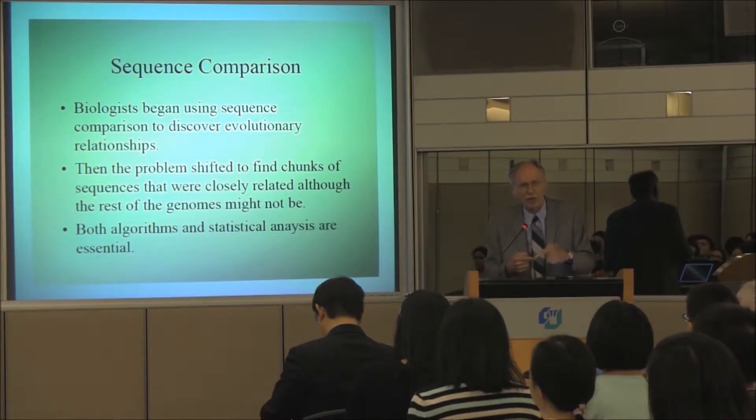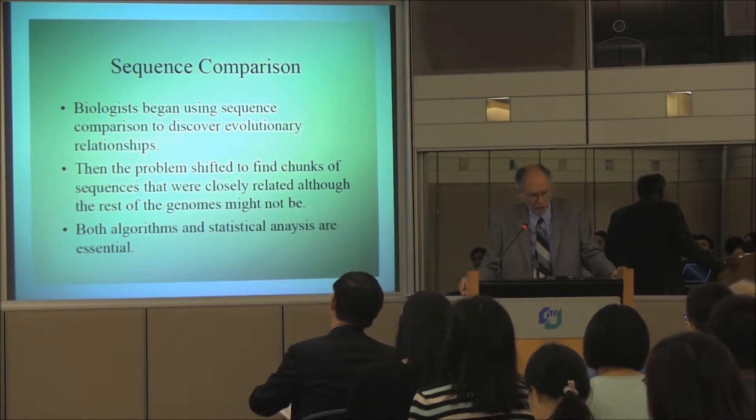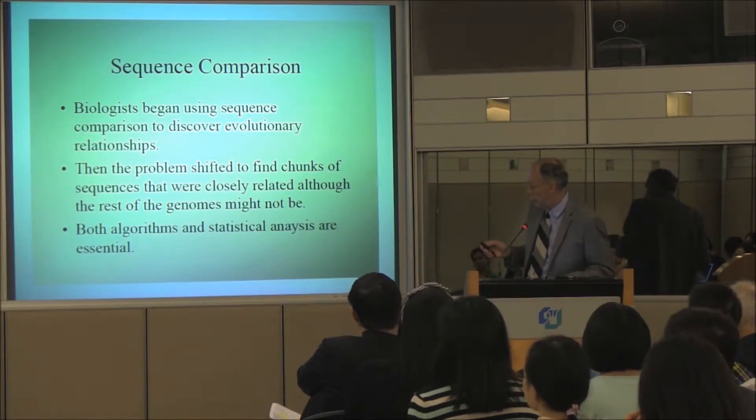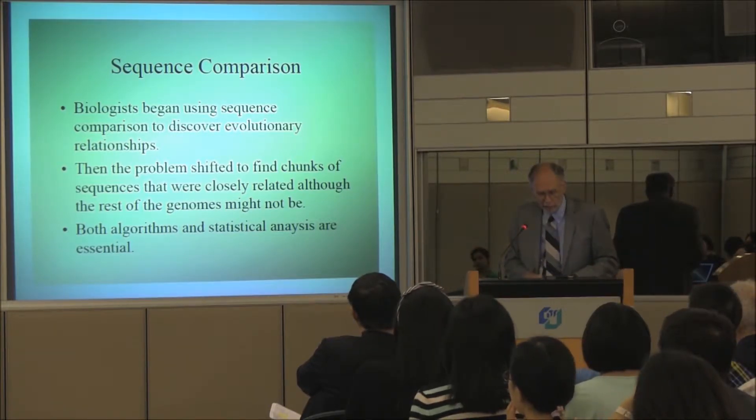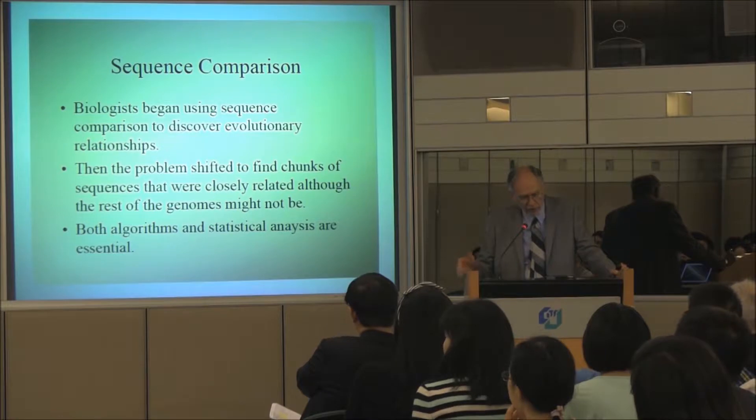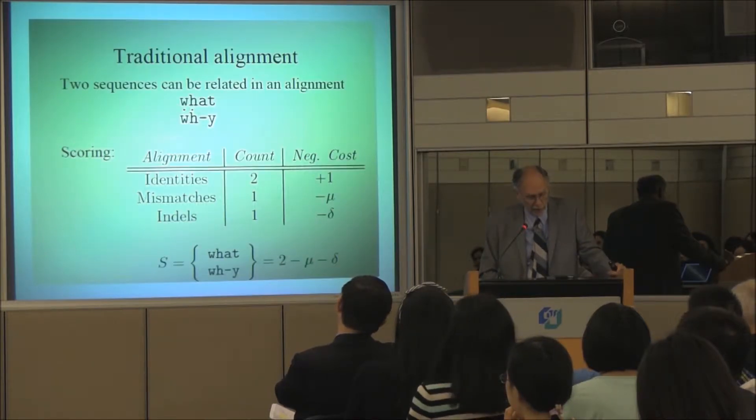The methods I'll talk about essentially have to look at each pair of letters for dynamic or evolutionary relationships. Then the problem became finding pieces of sequences closely related to pieces of other sequences. This is an area that required some sophisticated statistics and some serious algorithmics.